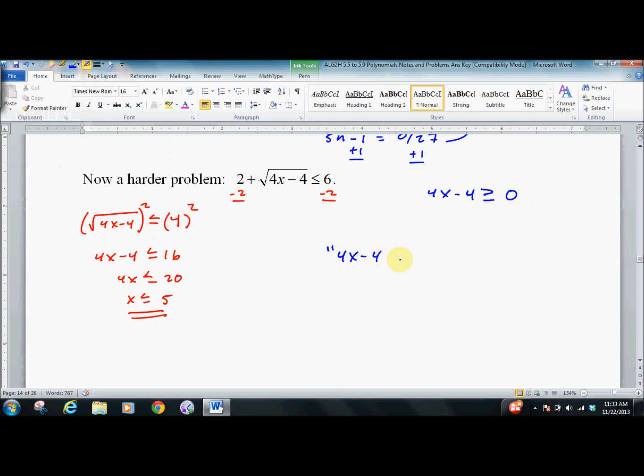Don't write this down. The sentence, 4x minus 4 is greater than or equal to 0.